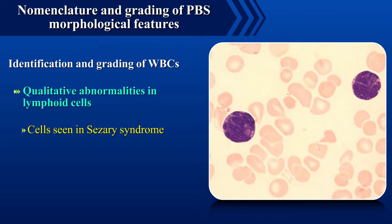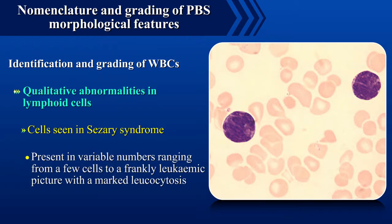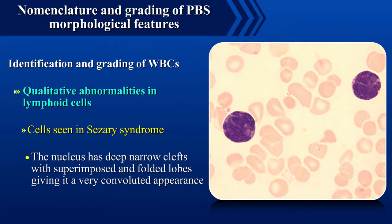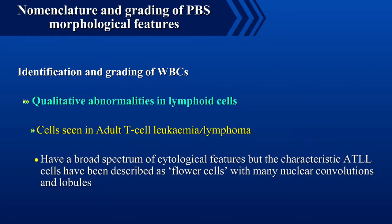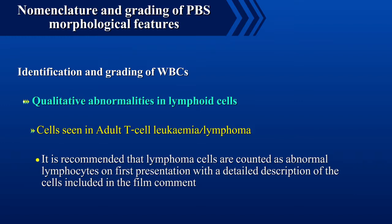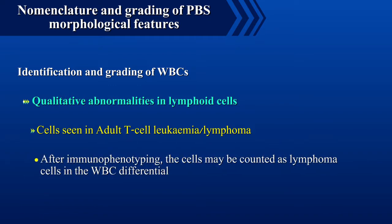Cells seen in Sézary syndrome are present in variable numbers ranging from a few cells to a frankly leukemic picture with marked leukocytosis. The cells may be large or small; the nucleus has deep narrow clefts with superimposed and folded lobes giving it a very convoluted appearance. Cells seen in adult T-cell leukemia/lymphoma have a broad spectrum of cytological features, but the characteristic ATLL cells have been described as flower cells with many nuclear convolutions and lobules. It is recommended that lymphoma cells are counted as abnormal lymphocytes on first presentation, with a detailed description in the film comment, and after immunophenotyping may be counted as lymphoma cells in the WBC differential.